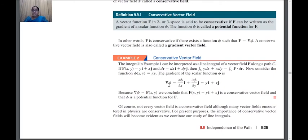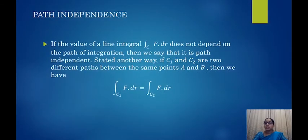So we get grad(phi) = y·i + x·j. Now our vector function was also y·i + x·j, so grad(phi) equals F. We can conclude that the vector function we are dealing with is a conservative vector field, and phi = x·y is called the potential function of F. I hope the concept of conservative vector fields is clear.